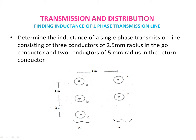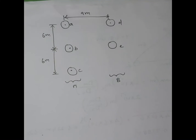Good evening students. Today we are going to discuss the inductance of a single phase transmission line. Previously we have discussed inductance of a three phase transmission line. Here now there are two conductors: go conductors and return conductors. The go conductor has three conductors of radius 2.5 mm and the return conductor has a radius of 5 mm.